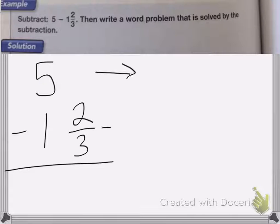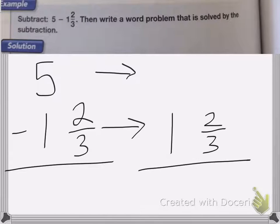So we're just going to rewrite the whole thing on this side. The 1 and 2 thirds will stay the same, and it's still going to be subtracting. So what we're going to do is we're going to borrow from the 5. The 5 will become a 4, so we'll put our 4 over here.